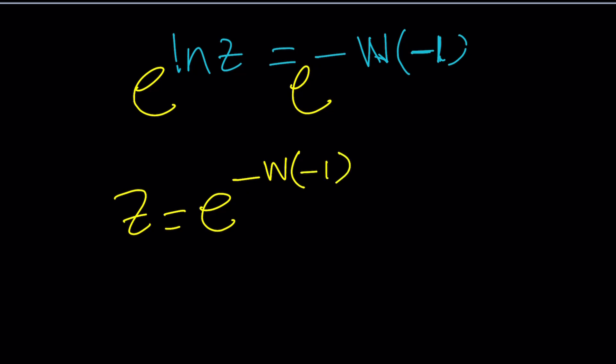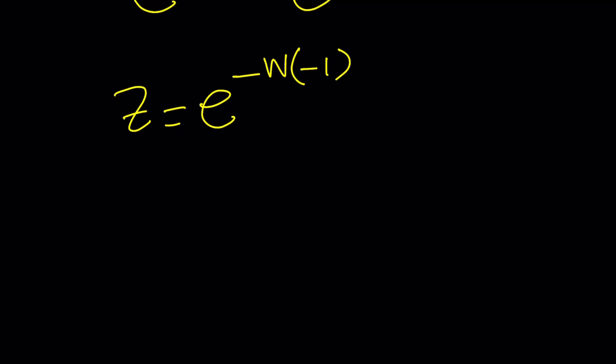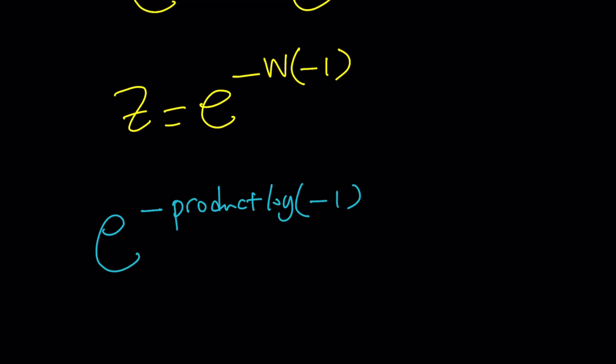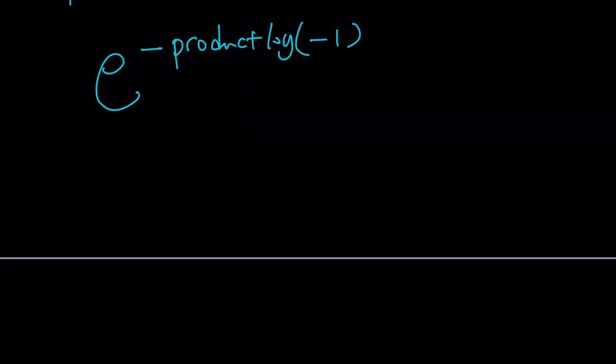So whatever that number is, it's going to be a complex number. Because if you look at the graph of Lambert's W function — you can input this as negative product log of negative 1 in Wolfram Alpha, which is going to give you the z value directly. Let's go ahead and take a look at what Wolfram Alpha gave us for the z value. Is there only one solution? There's more than one. Let's go ahead and take a look.